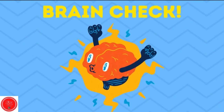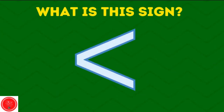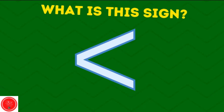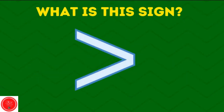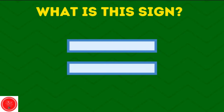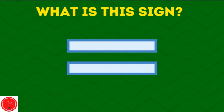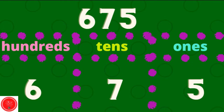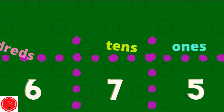Let's do a brain check. What's this sign? Less than, greater than, equal to. When we have a three-digit number, that first number is the hundreds place, the second number is the tens place, and the last number is the ones place.